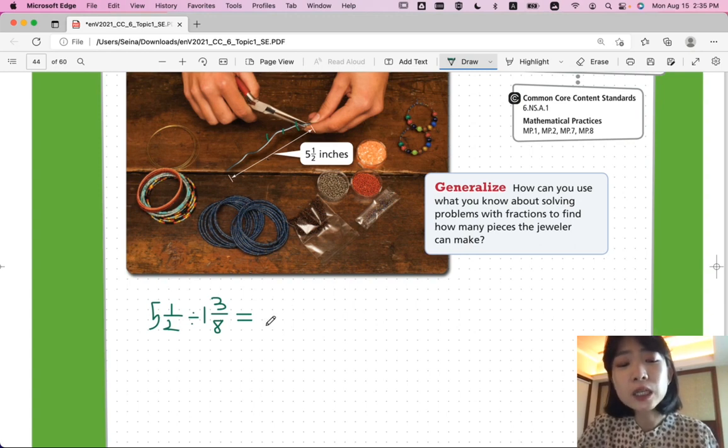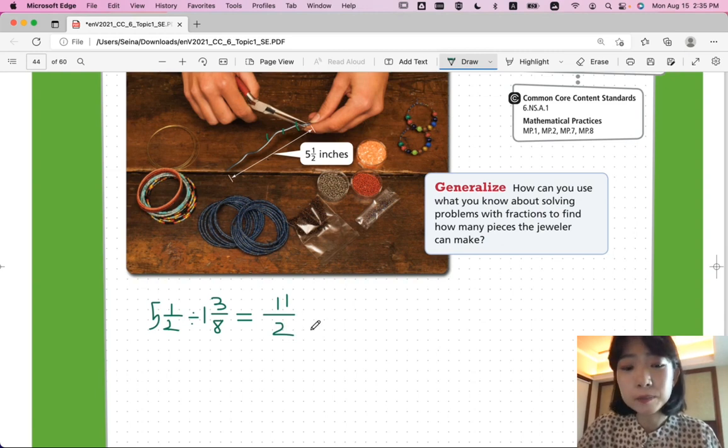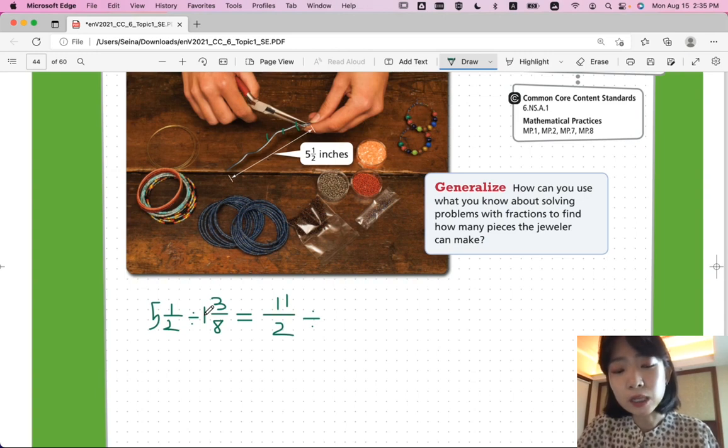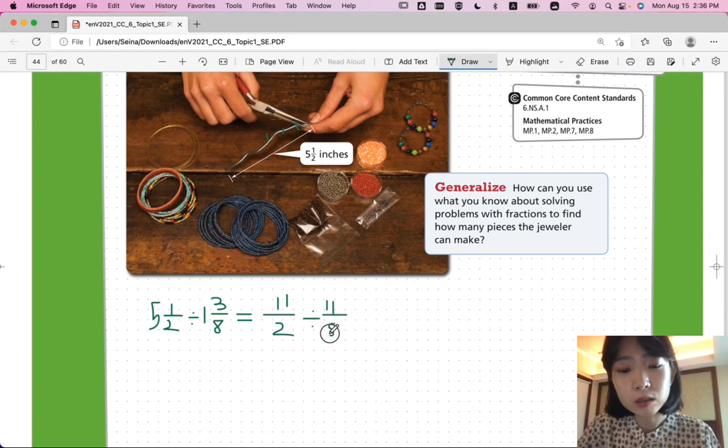So, change this into fractions. 5 times 2 plus 1 is 11, 11 over 2. And then, divide it by 8 times 1 plus 3 is 11 as well, 11 over 8. And so, if you change that into multiplication now, you can use the reciprocal of the divisor 11 over 8. So, change this into multiplication and use the reciprocal of 11 over 8. And that will give you the answer.